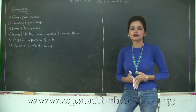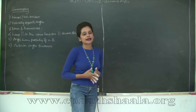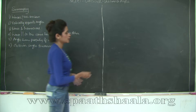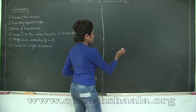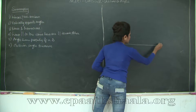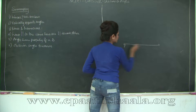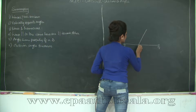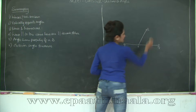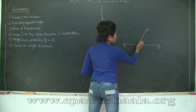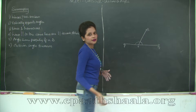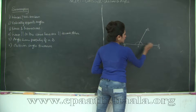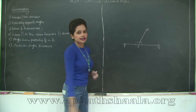First of all, we learnt about the linear pair axiom. The statement says: if I have a straight line PQ and a ray OR stands on it, then the sum of the adjacent angles so formed is going to be 180 degrees. So angle POR plus angle ROQ is equal to 180 degrees.